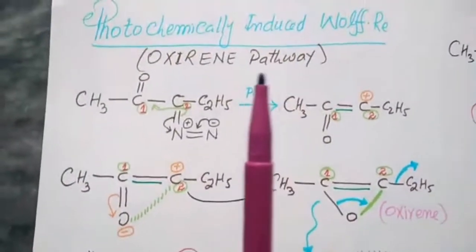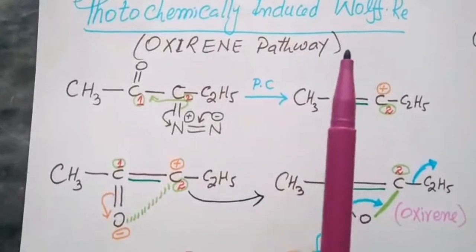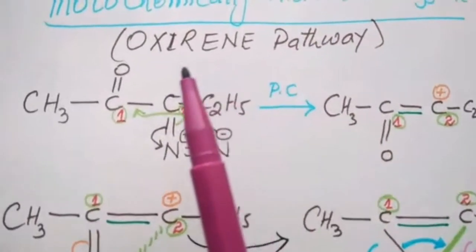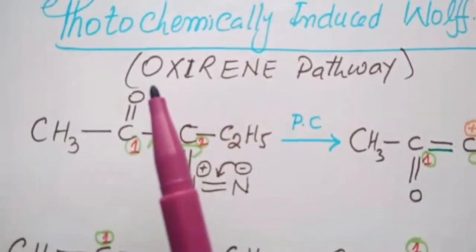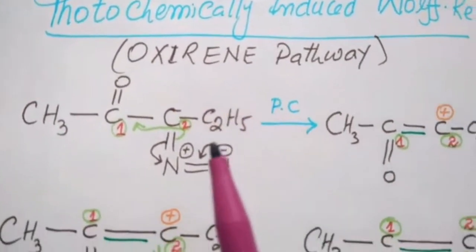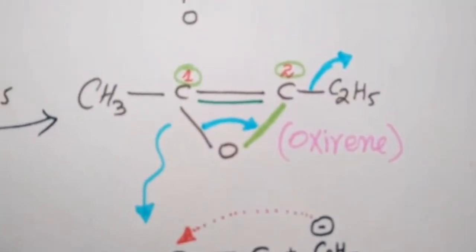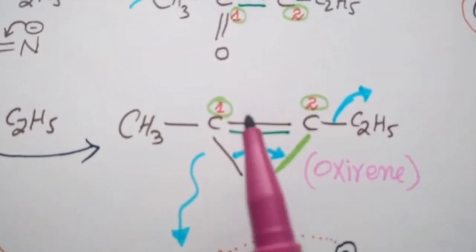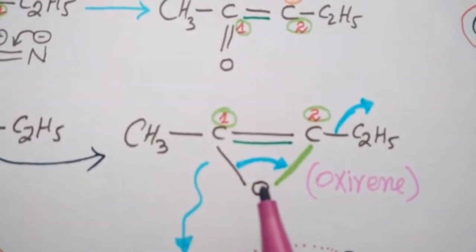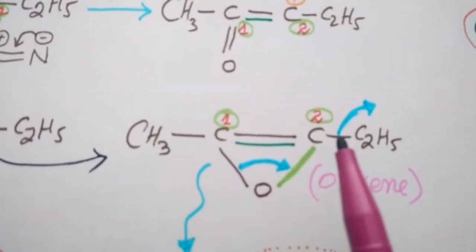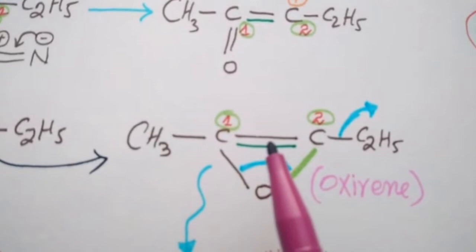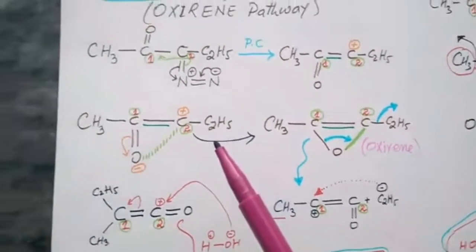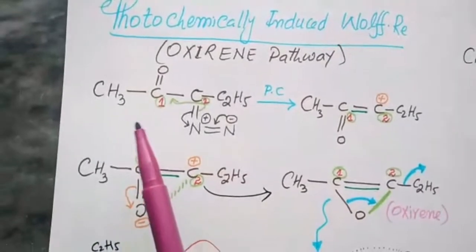Next mechanism, second mechanism of Wolff rearrangement is photochemically induced Wolff rearrangement. It is also known as oxirene pathway. This product is known as oxirene. This compound has one double bond and oxygen with one-two-three and one single bond.